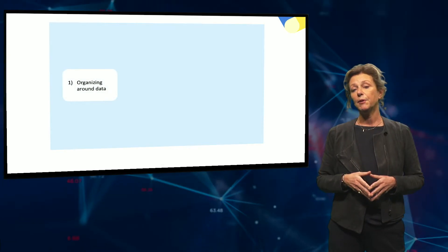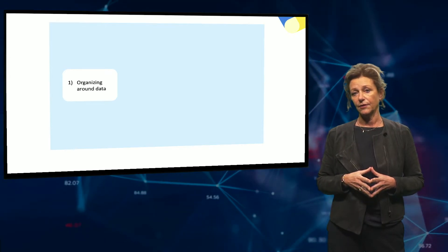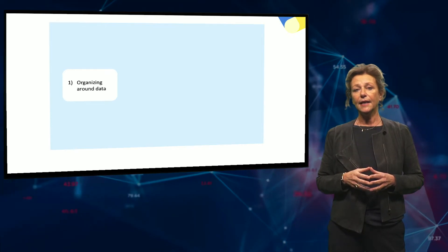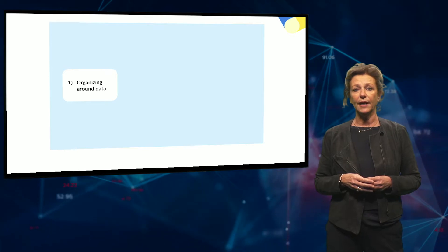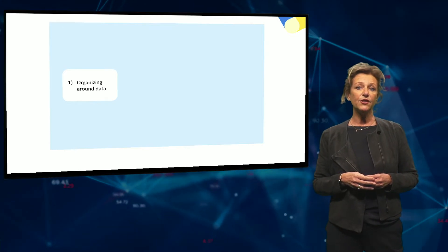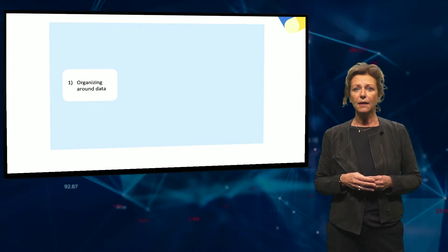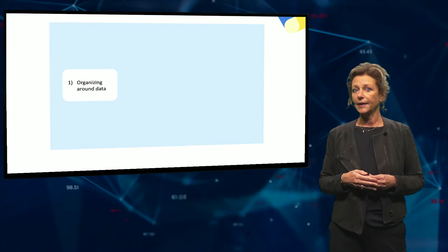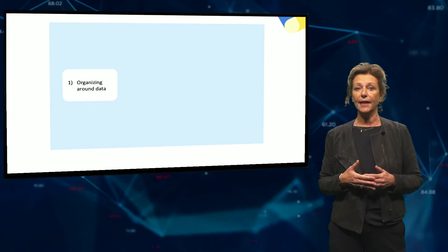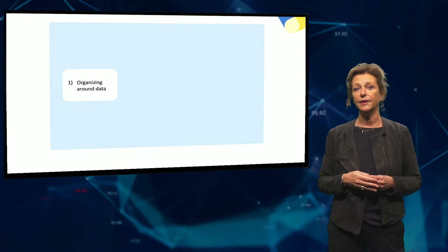The first step in implementing AI is organizing around data. Data is the central building block of AI. While most attention is directed at big data, much less is known about what kind of data is required to make AI systems fit neatly within an organization.